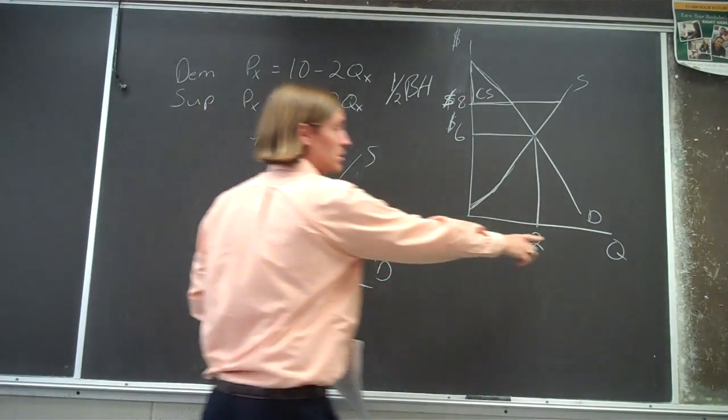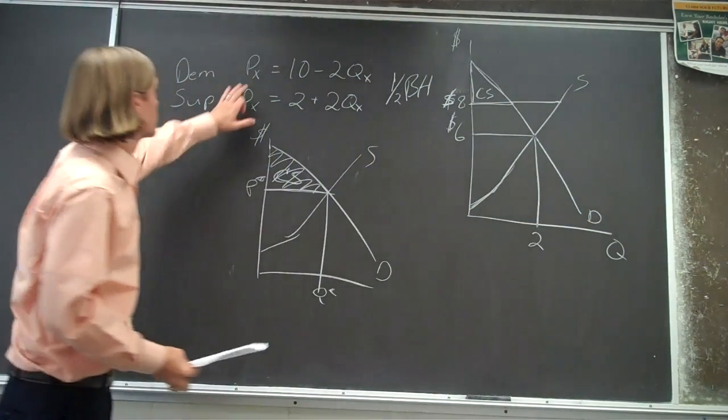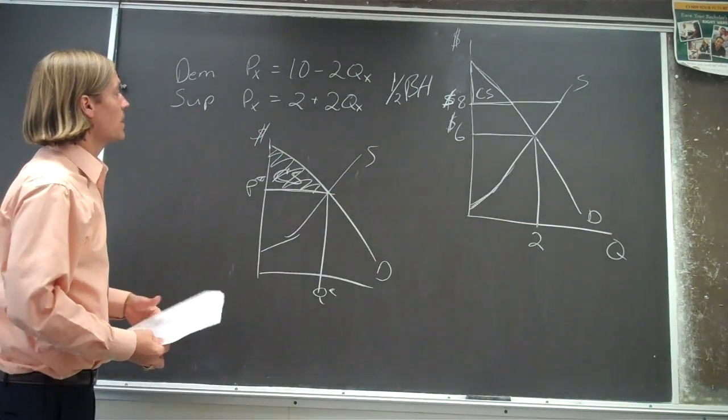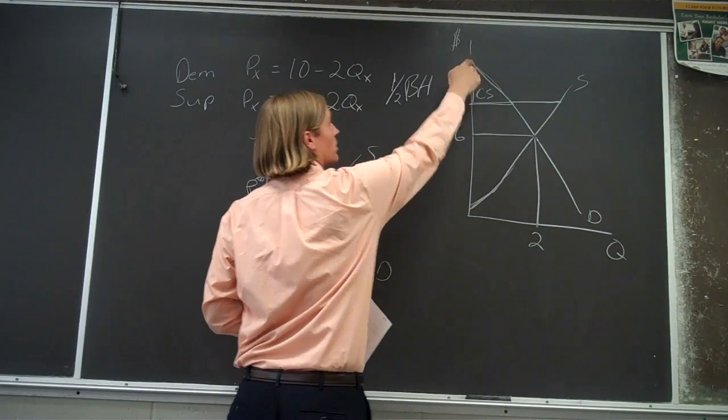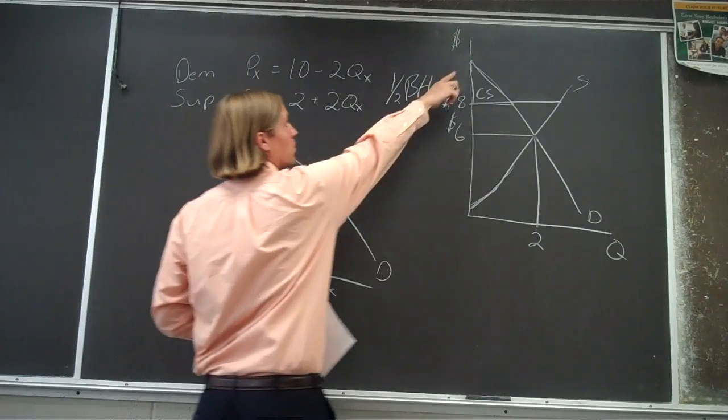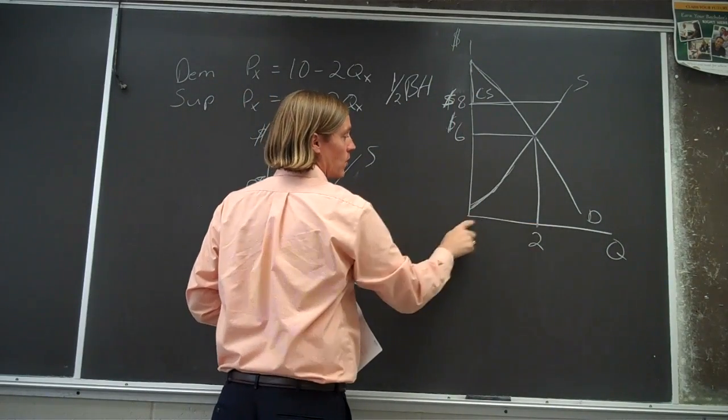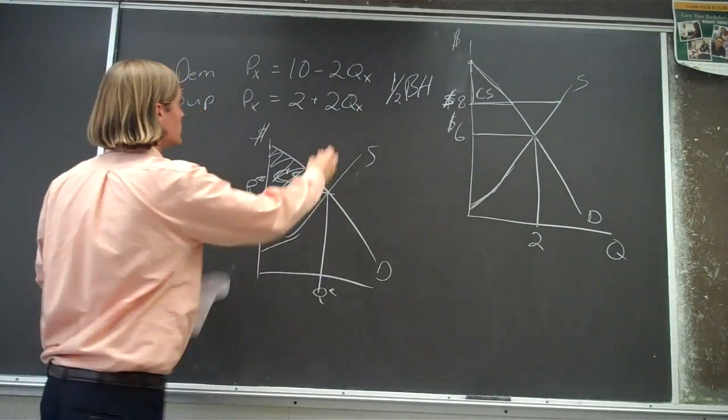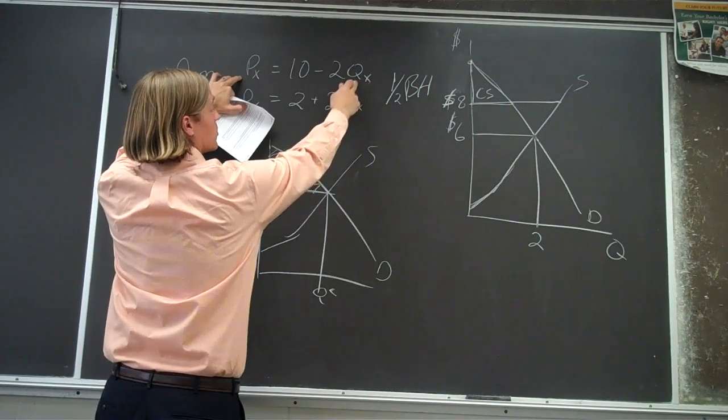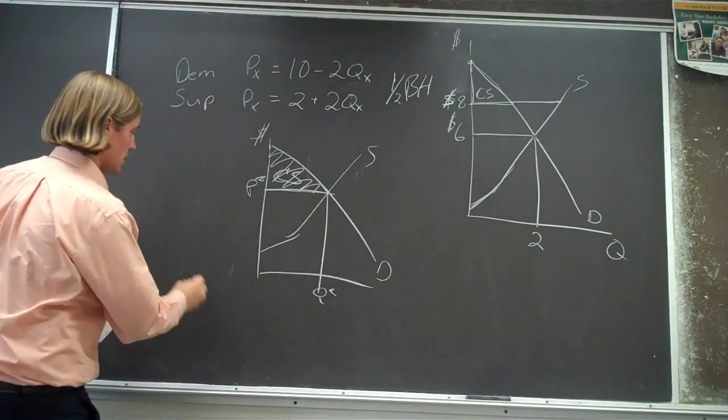Well, we've got a demand equation. So we have this demand equation. And we want to know, what's this point? And one thing we know about that point is that we don't know what the price is, but we know that the quantity at this point is zero. And so if we take this demand equation and we say, we know the quantity is zero.